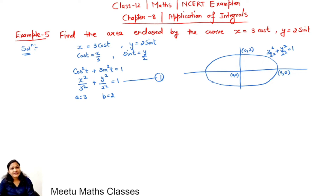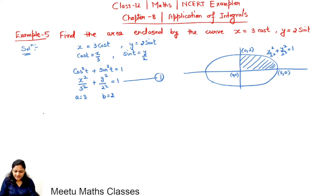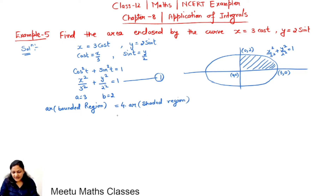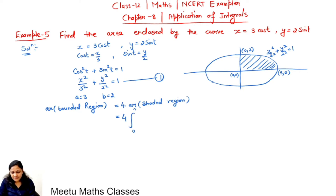This figure is symmetrical about both the x-axis and the y-axis. So the total bounded area can be written as 4 times the area of the shaded region. Therefore, the area of the bounded region equals 4 times the area of the shaded region.